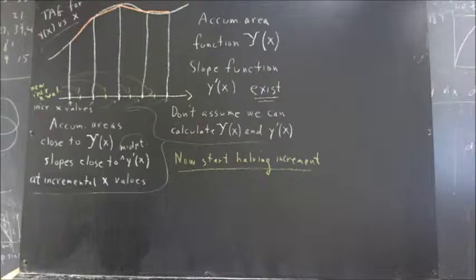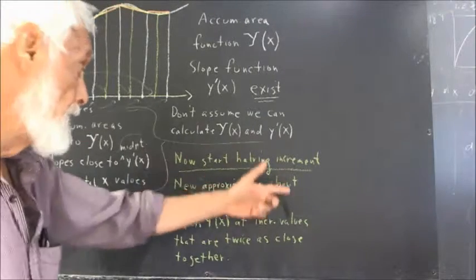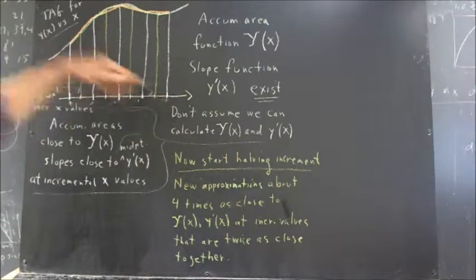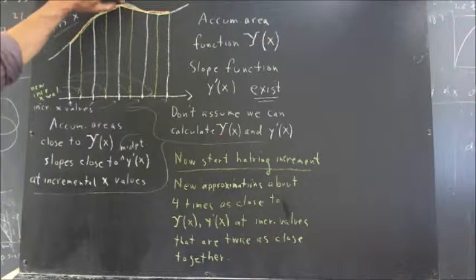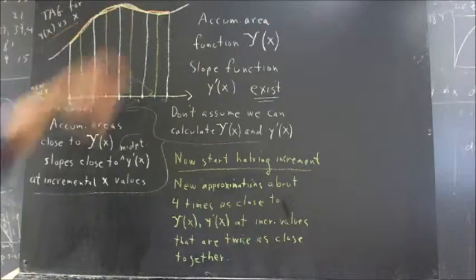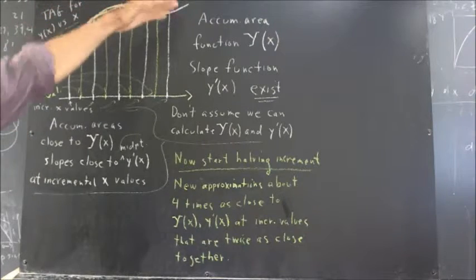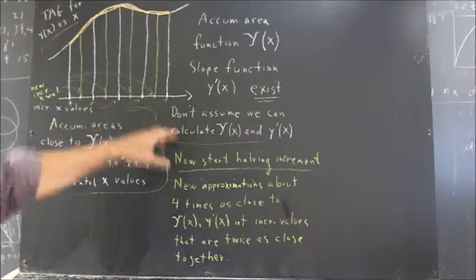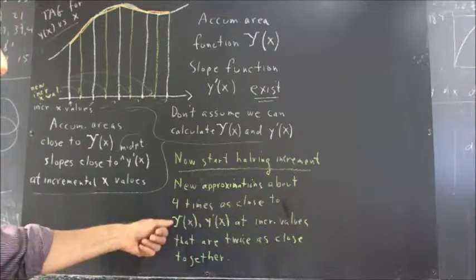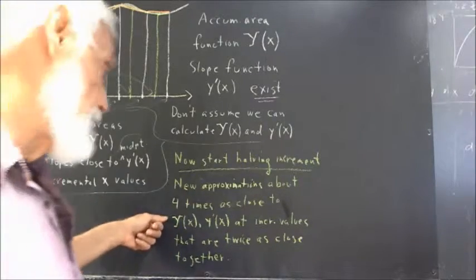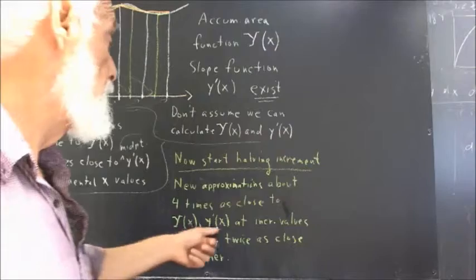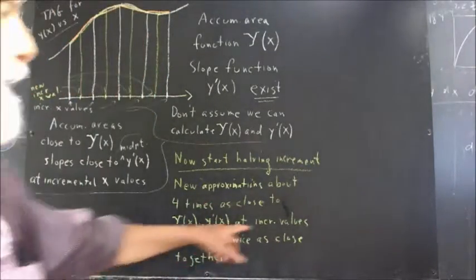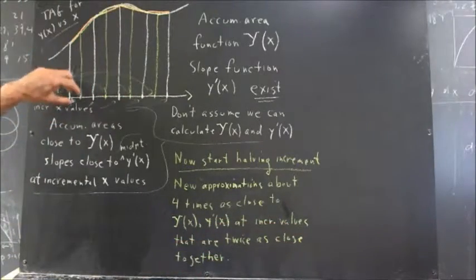So our new approximations, if we have the increment, we get a graph where our approximating segments are much closer to the original graph — basically something like four times as close. So our new approximations are about four times as close to the values of our big fancy Y of x and y prime of x, our accumulated area and slope functions, at those incremental values. And our incremental values are now twice as close together.